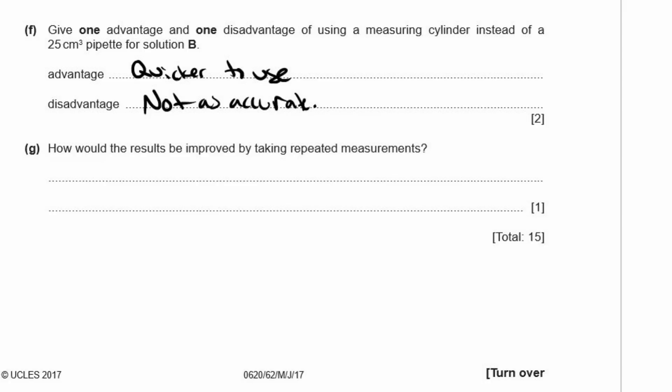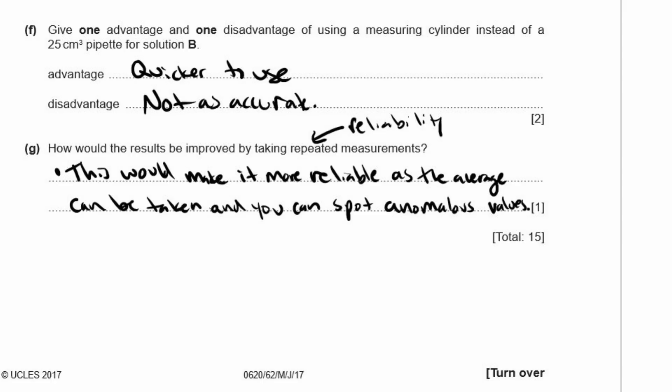And G. How would the results be improved by taking repeated measurements? Well, whenever they say repeated, repeated measurements always have to do with reliability. Just like if a question asks, how can you make the investigation more reliable? The answer is always repeat and take the average. So it would make it more reliable because you can take the average. So this would make it more reliable as the average can be taken and you can spot anomalous values. That's why it makes it more reliable that if you have an anomalous value, you can discount it from the readings and take another reading and then it works. Okay, so that is actually three possible marks for one mark. So saying it makes it more reliable, that's good enough for repeating measurements.